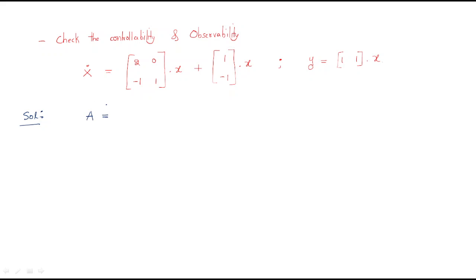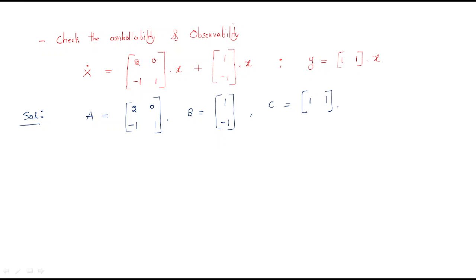For the solution, first write down the given data. The state matrix A is given as [0, -1; 1, ...], matrix B (the input matrix) equals [1; -1], and the output matrix C equals [1, 1].